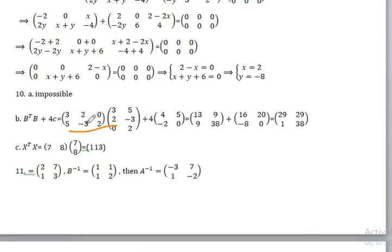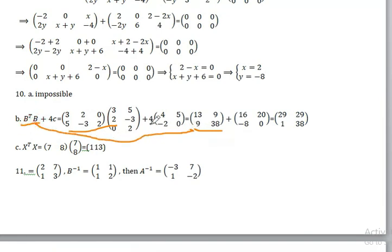5 times 3 is 15, minus 6 is 9. 5 times 5 is 25, plus 9, plus 4 is 38. So B transpose times B gives the result.